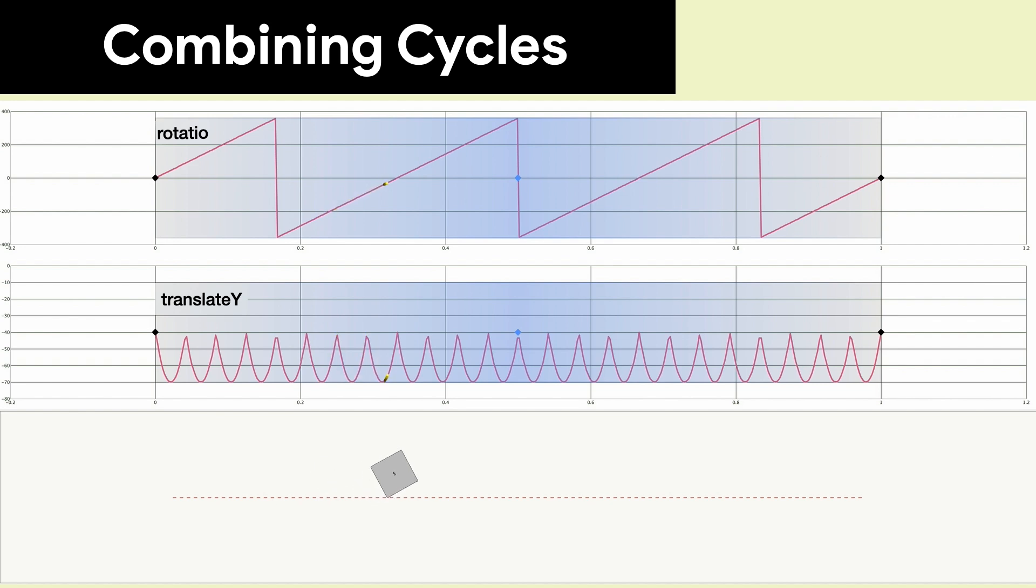You can combine KeyCycles to produce complex effects. Here we have a bounce of translateY and a sawtooth of rotation to produce a rolling box effect.